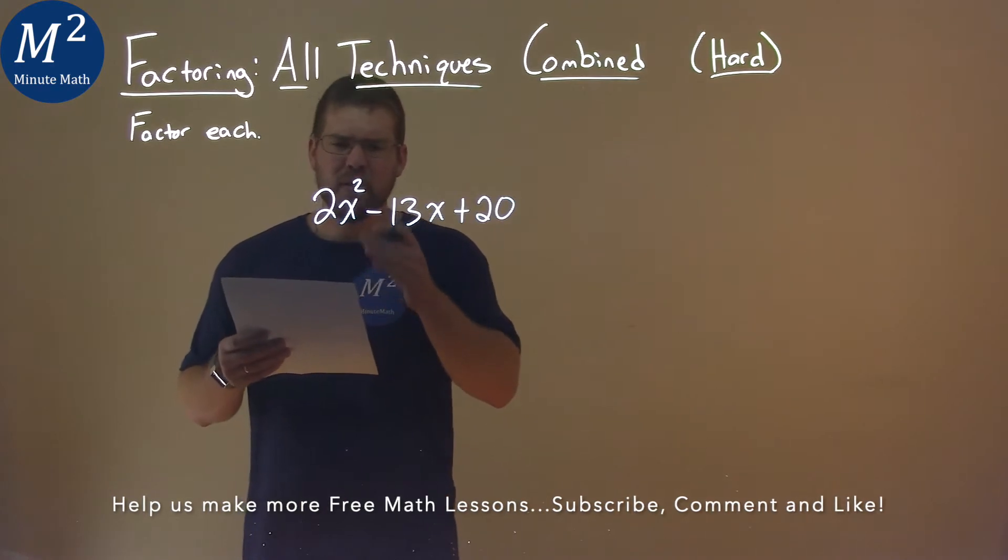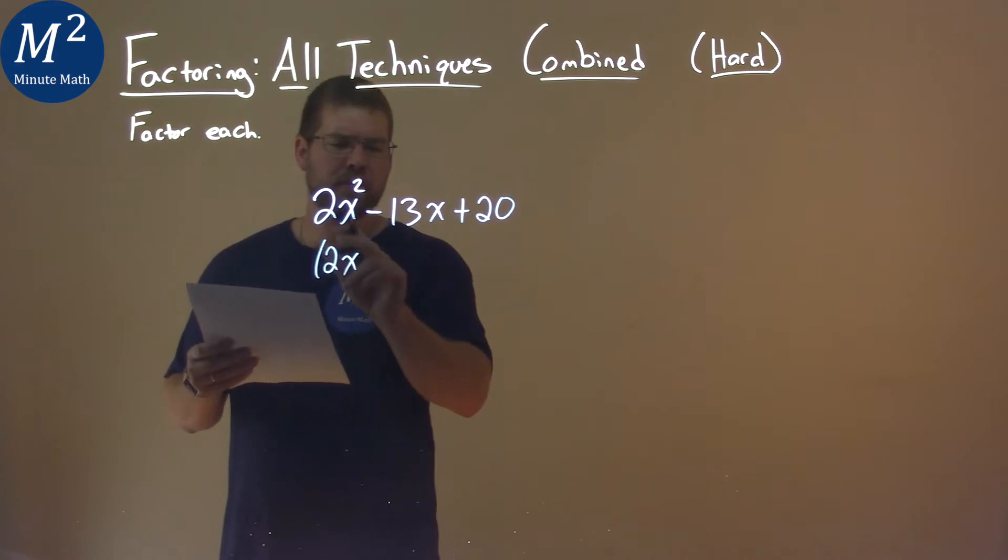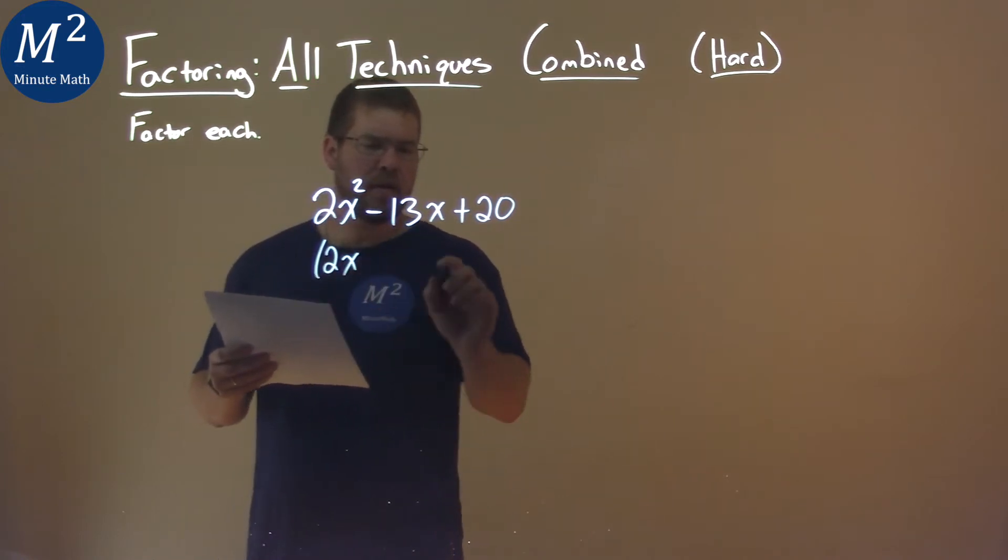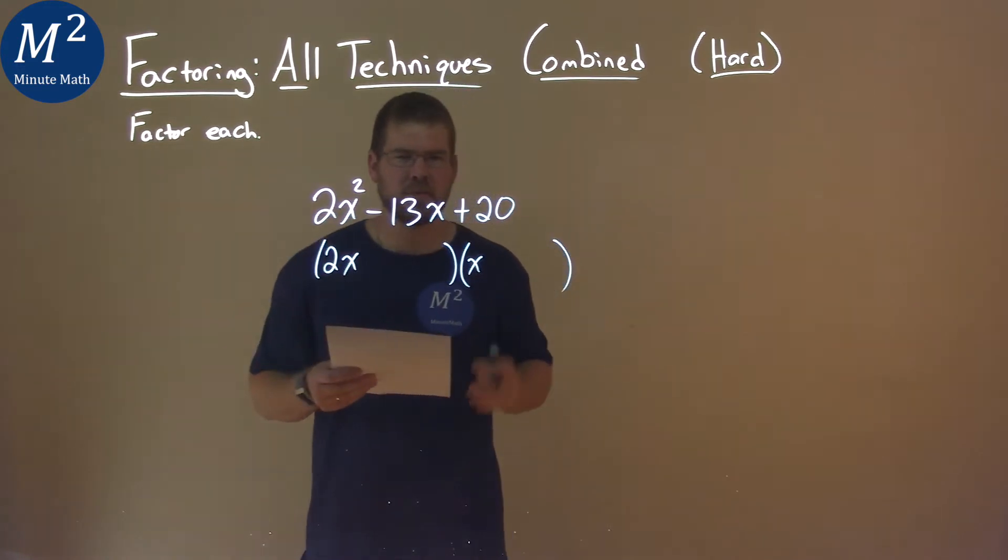Well, a little interesting here, we have 2x squared, so we know when it's factored, since our a value is 2, right there, that's going to be some form of 2x and then x, like this. And we're going to keep that in mind.